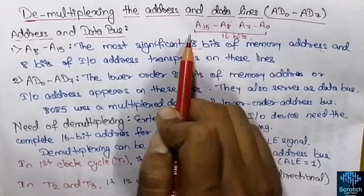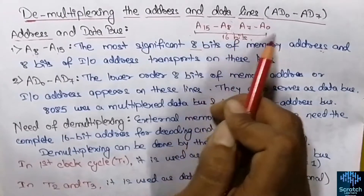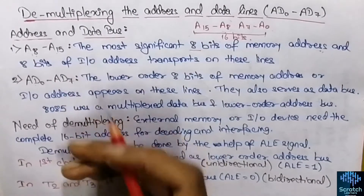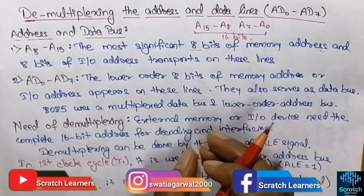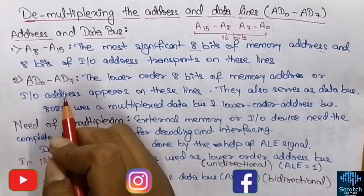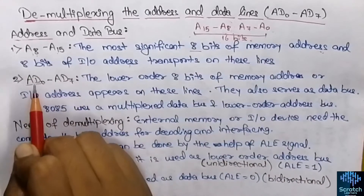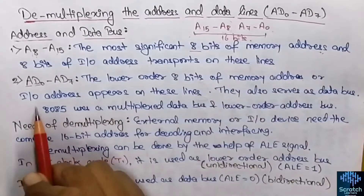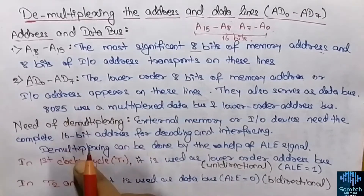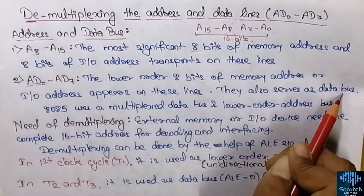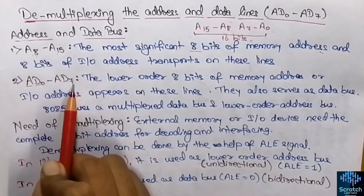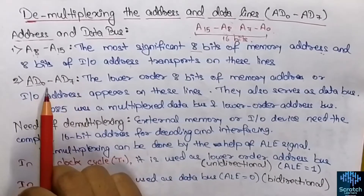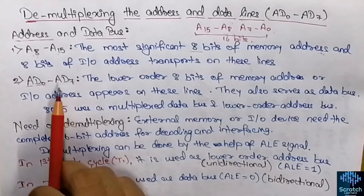Now what about the lower-order address bits? The 8085 has multiplexed lines AD0 to AD7. Multiplexing means combining — here the address lines and data lines are combined into a single set of multiplexed lines AD0 to AD7. The lower-order 8 bits of the memory or I/O address appear on these lines, which also serve as the data bus. This multiplexing is done to reduce the pin count of the device.